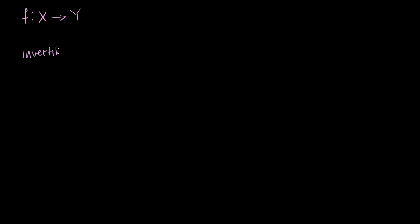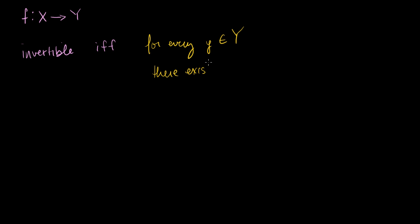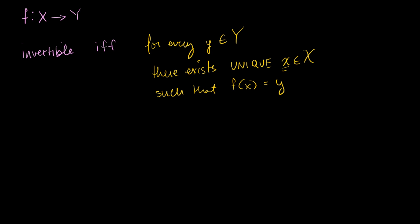A couple of videos ago, we learned that a function — a mapping from the set X to the set Y — is invertible if and only if, for every y that is a member of our codomain, there exists a unique x that is a member of our domain such that f of x is equal to y.